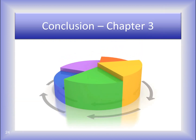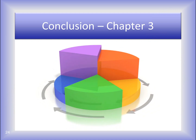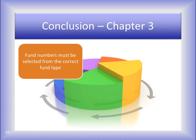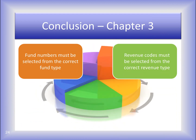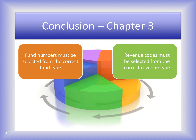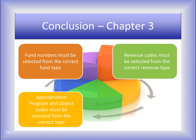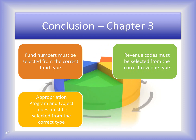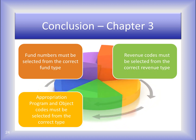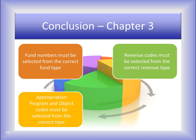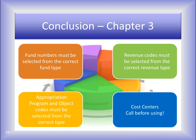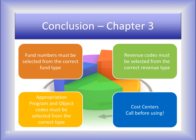Let's review what you've learned about the uniform chart of accounts in Chapter 3. Fund numbers must be selected from the correct type. Revenue numbers must be selected from the correct revenue type. Appropriation program and object codes must be selected from the correct type — this is where most fiscal officers make the wrong selection. And last, cost centers are often misused. Call UAN to discuss before setting them up. You may save yourself a lot of extra work.